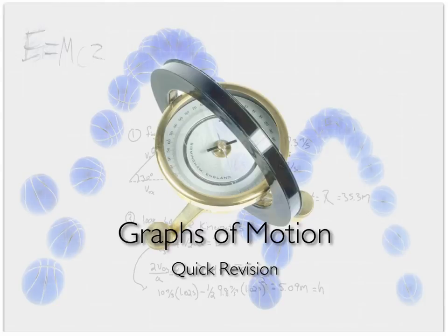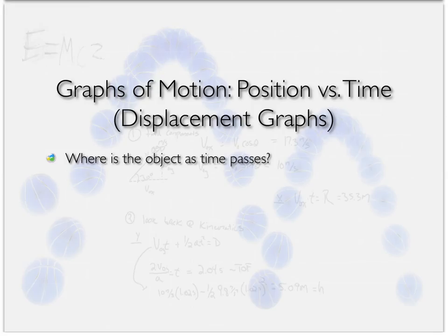Graphs of motion are quite literally that — they're graphs that help you see the numbers when you're talking about a moving object. Moving objects are very often full of numbers: velocities, accelerations, and displacements. Graphs give us a very powerful way to figure out how something is moving. There are three different types of graphs of motion. The first is called a position versus time graph, or sometimes a displacement graph. There is a very big difference between position and displacement.